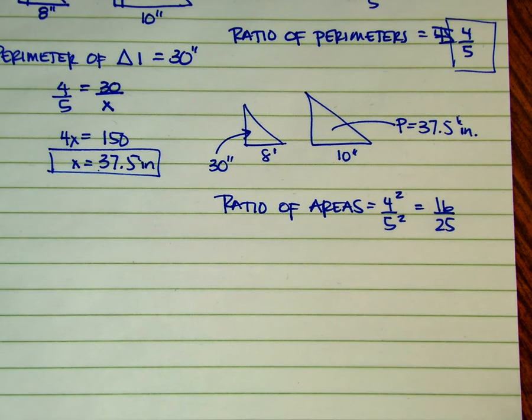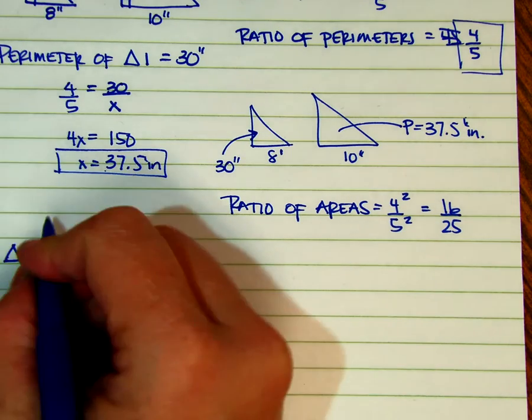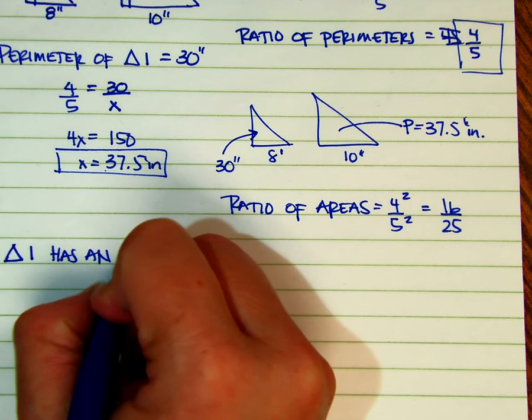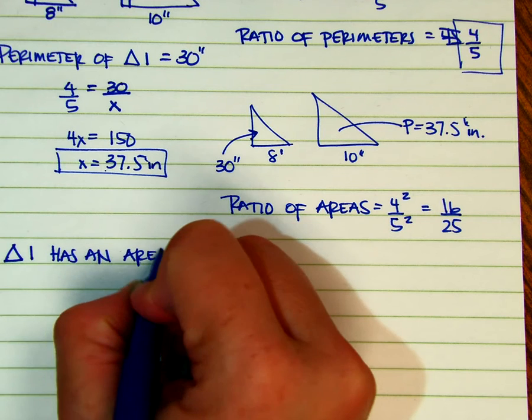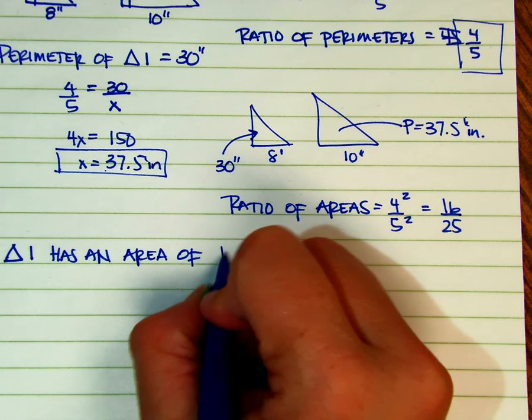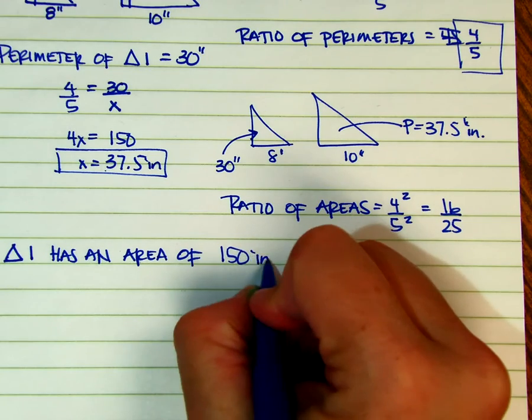So the ratio of my areas are going to be 16 25ths. So let's go back to this example, and I'm going to tell you that triangle 1 has an area of, let's say, 150 inches squared.